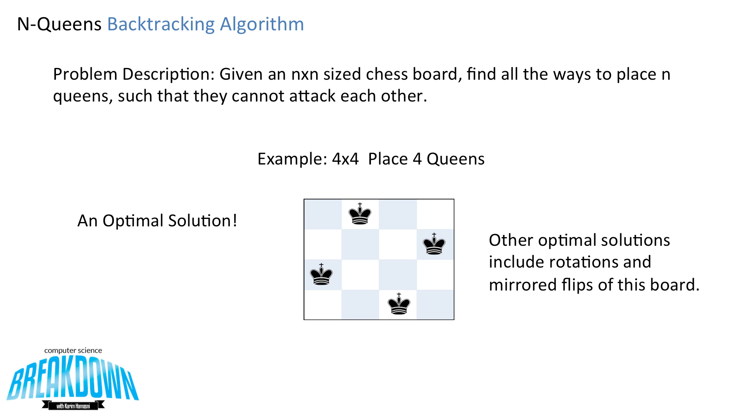If we look at another queen — the one on the left — we can see that its row and column are completely clear of any other Queens, and its diagonals are clear of any other Queens as well. So this here is actually an optimal solution.